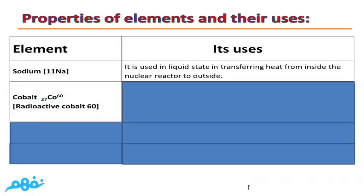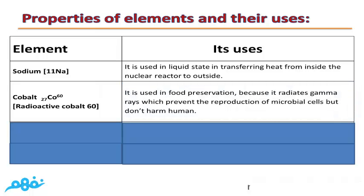Cobalt-60 is one of the radioactive isotopes of Cobalt. It is used in food preservation because it radiates gamma rays which prevent the reproduction of microbial cells but do not harm humans.